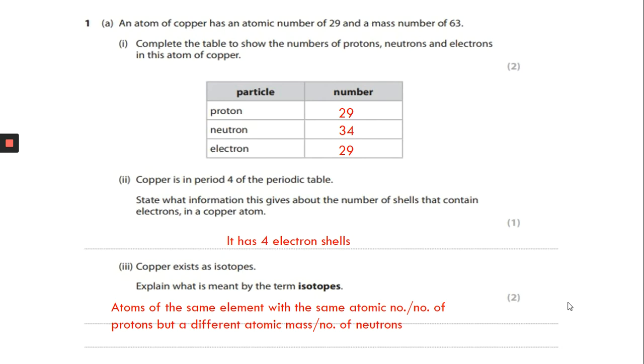So let's work our way through these nice and quick. It says an atom of copper has an atomic number of 29 and a mass number of 63. Complete the table to show the numbers of protons, neutrons and electrons in this atom of copper. Hopefully, again, this should be fairly easy. You should know that the atomic number is the number of protons and that the number of protons and number of electrons will be the same. It's got a mass number of 63. So we do 63 minus 29 and that gives us 34 neutrons. You need to get two right to get one mark and three right to get two marks.